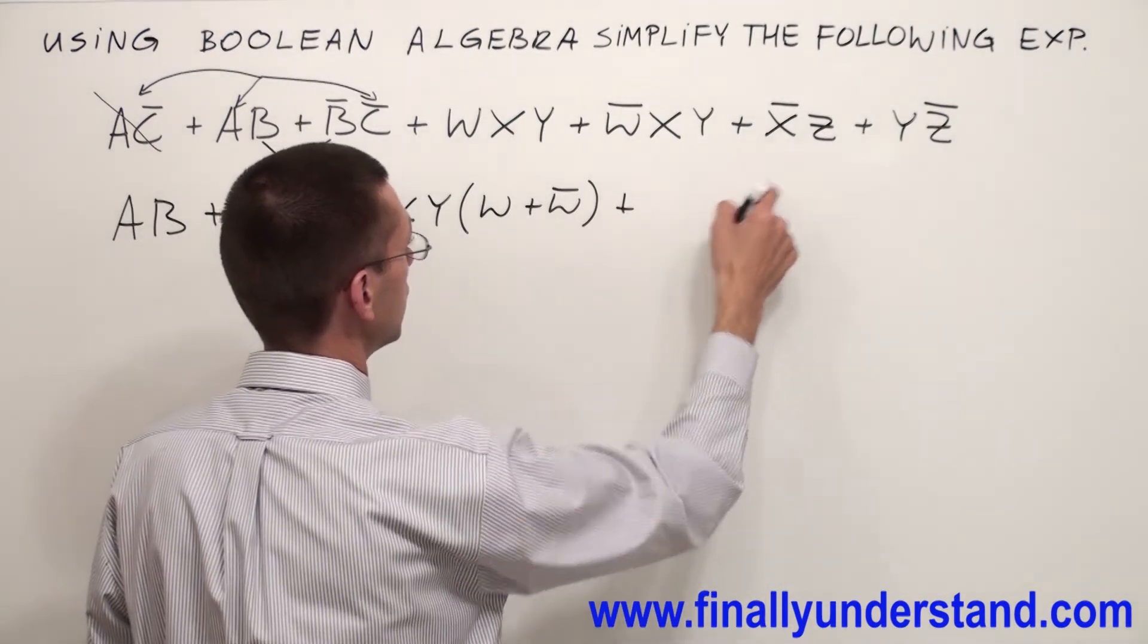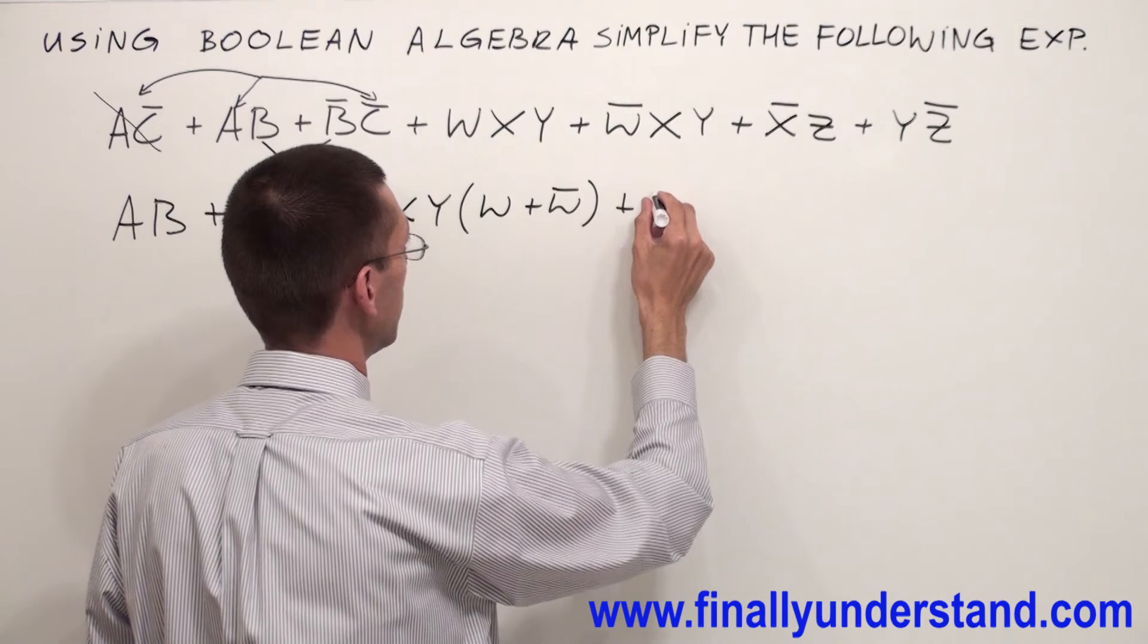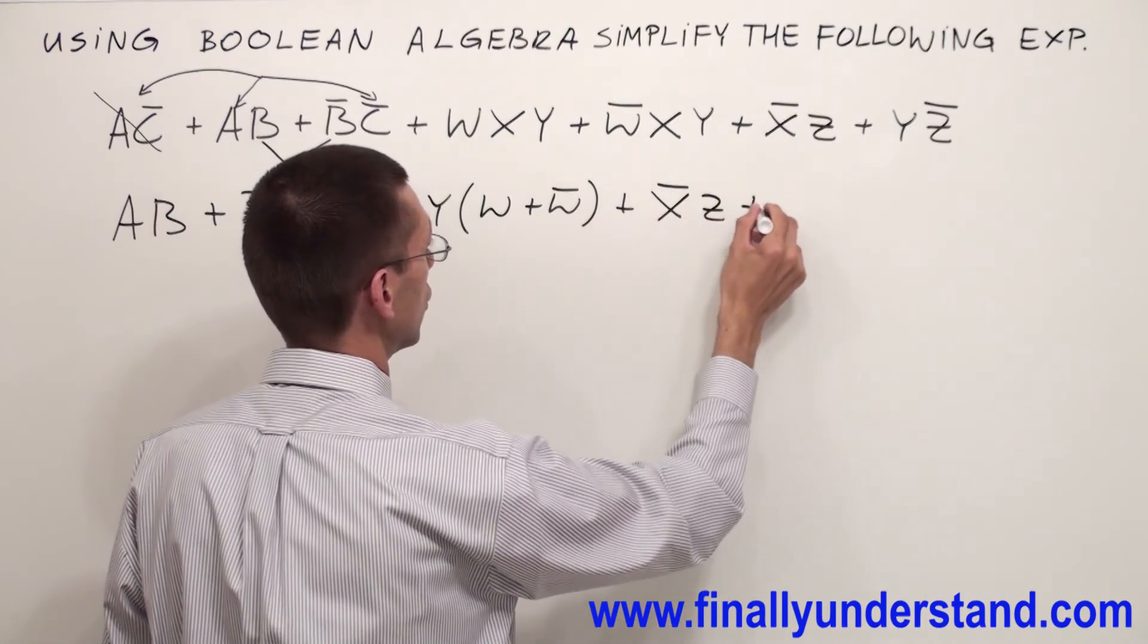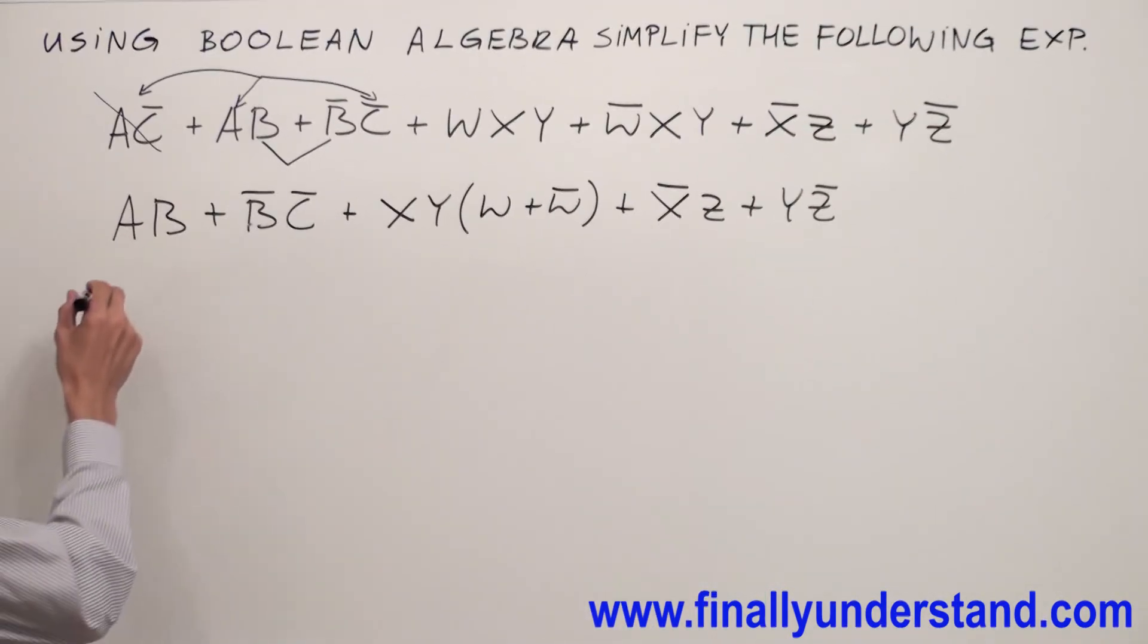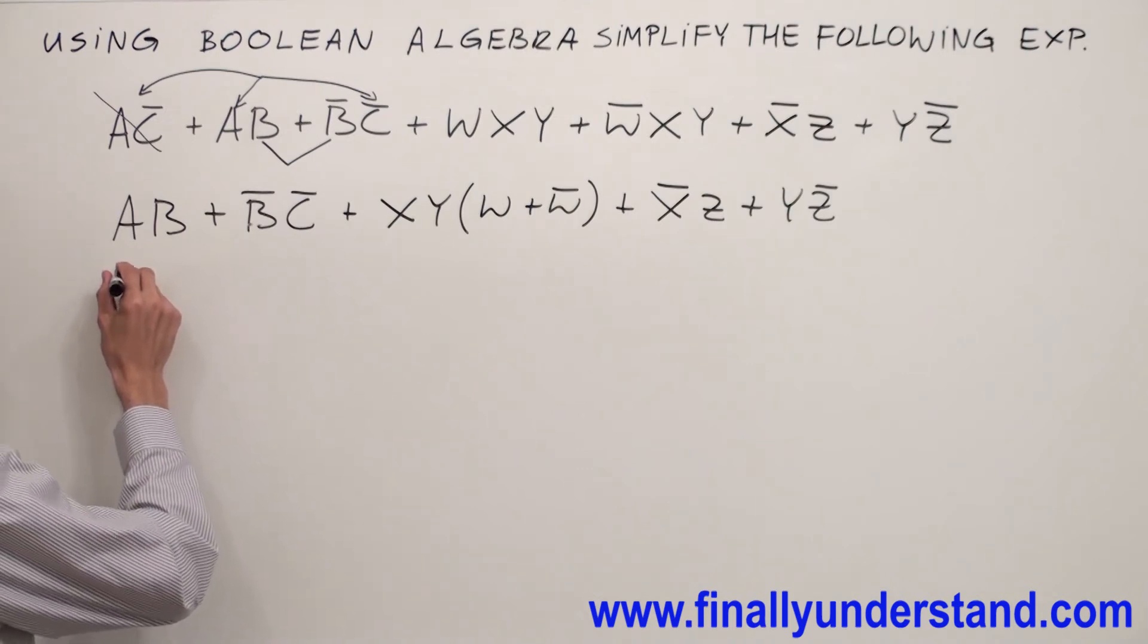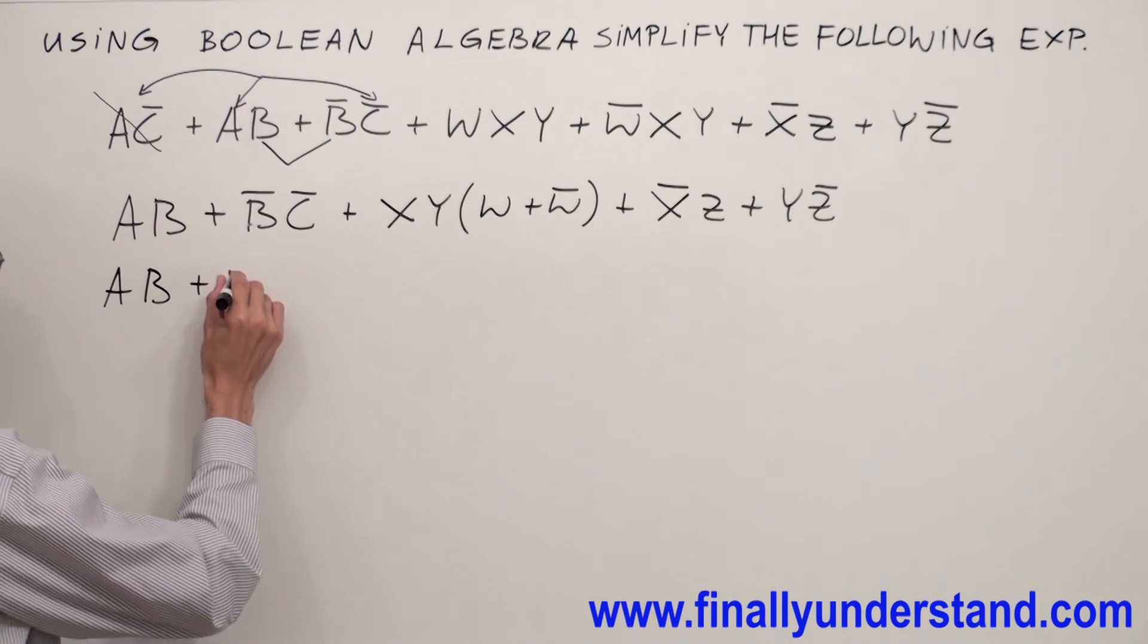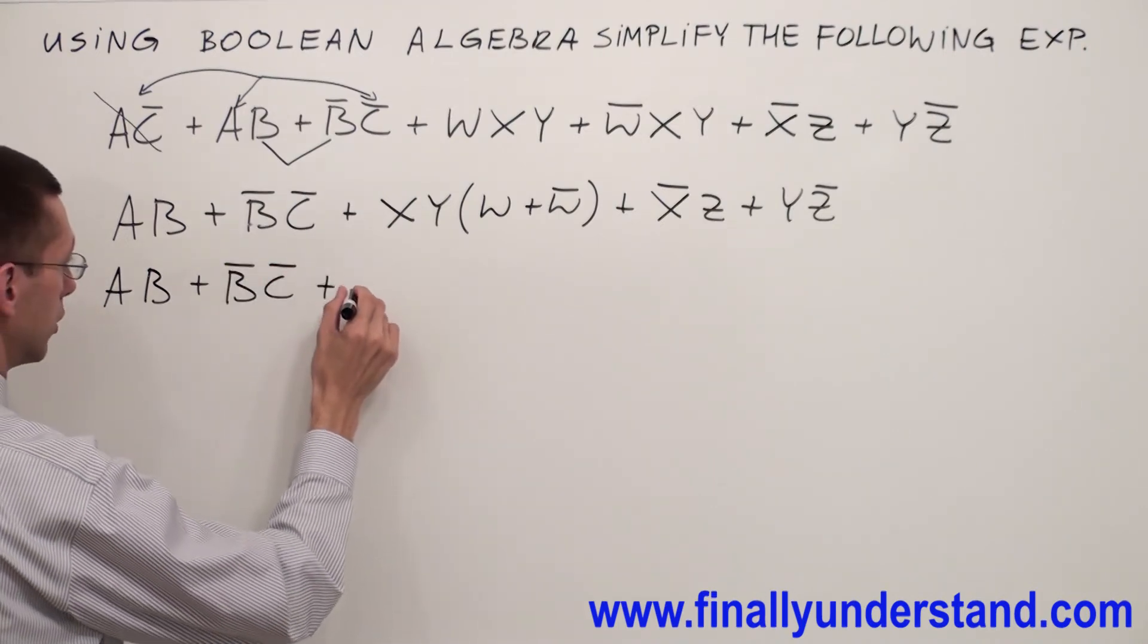And I am going to eliminate W. Or can I do something over here? Not at this moment, so just let me copy this down. So I have X'Z or YZ'. I am going to rewrite this problem one more time. And I am going to have AB or BC' or XY.